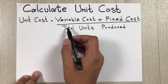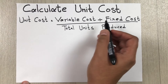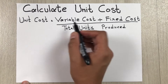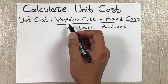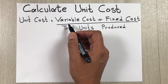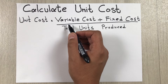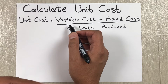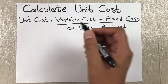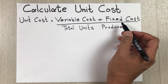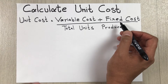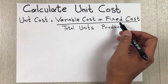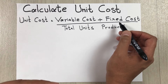Let me explain variable cost and fixed cost. Variable cost is the cost that changes according to production or sales — examples of variable costs are labor and raw material. Fixed cost is the cost that does not change — for example, rent, insurance, and machinery.